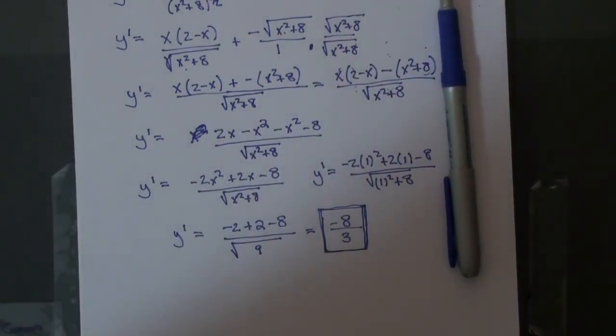Our final answer is: y prime evaluated when x is equal to 1 of the original function is negative 8 thirds. And that is how we do problem number 15.